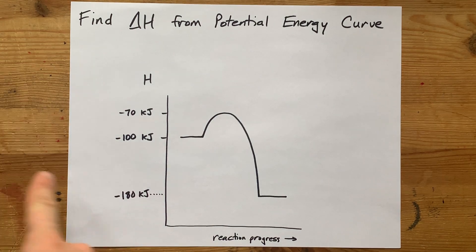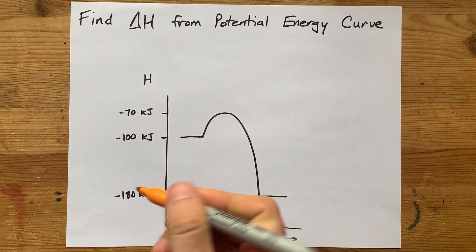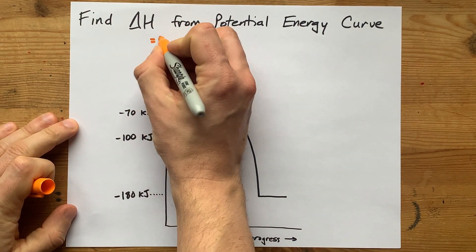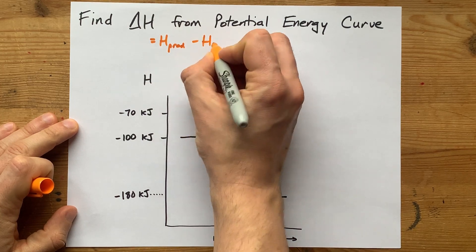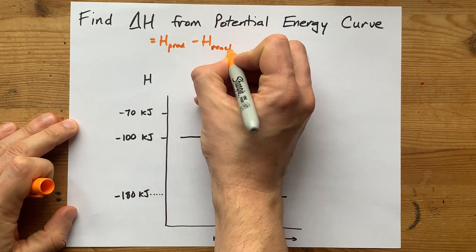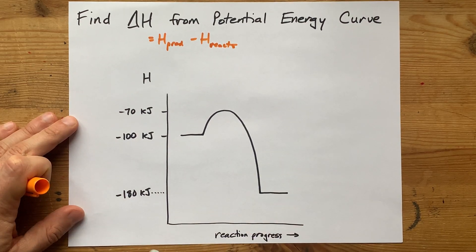How do you figure out delta H from a potential energy curve? The answer is that delta H is generally the H of the products minus the energy of the reactants. So you can look those numbers up on a potential energy curve.